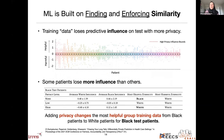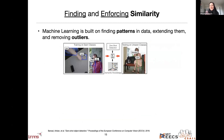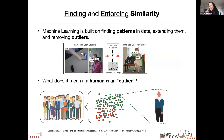That's really bad. What's even worse is that the data losing its predictive influence when you add privacy is minority data. Adding privacy changes the most helpful training group from Black patients to White patients on Black test patients — not because those patients are now more similar, but because minority patients are outliers in the dataset. Machine learning techniques like differential privacy are built on finding and enforcing similarity. But if we're finding patterns in data and extending them while removing outliers, what does it mean if a human is an outlier? That's something we haven't fully engaged with in the machine learning for health space.